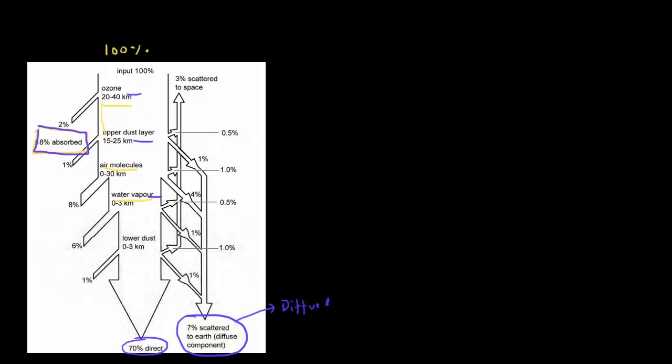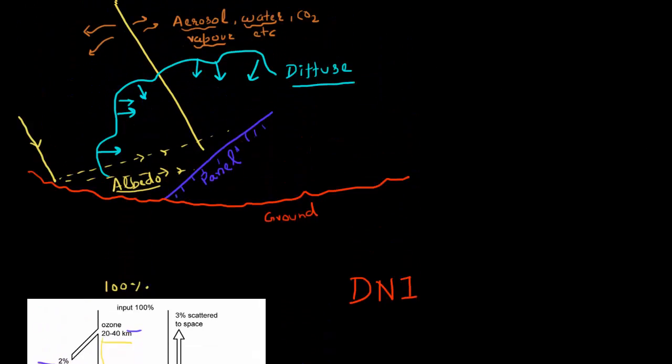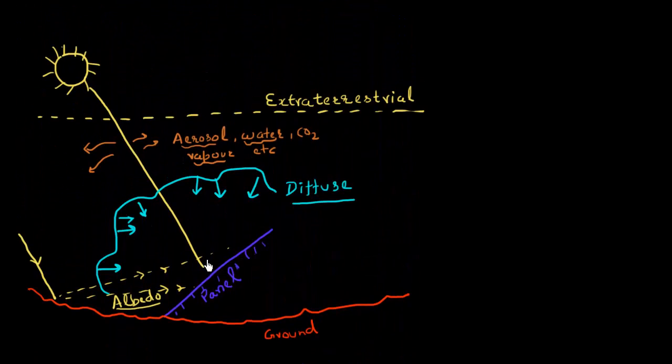So this DNI, or this direct normal irradiation, it basically measures the amount of sunlight which is facing, or which is at an angle which is 90 degrees, or it's normal to the direction of the sun.